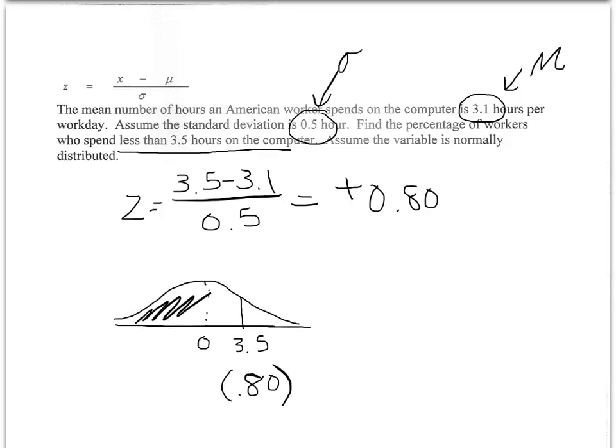When I go to put this in the calculator, I'm looking for this area here. This would be a normal CDF because we're talking about cumulative. It would go from negative infinity up to positive 0.80. It's going to give you a decimal, a proportion, a probability, which means 78.8 percent spend less than 3.5 hours.